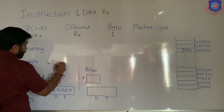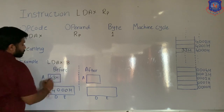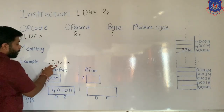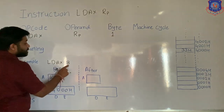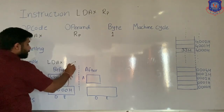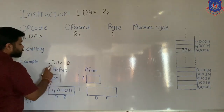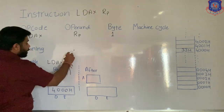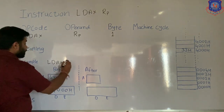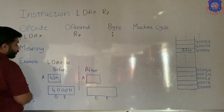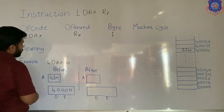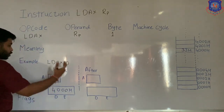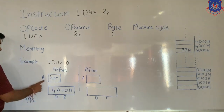Let's see one example to get a clear idea. LDAX B means load data to accumulator from the memory location specified in BC pair. If we write LDAX D, it means load data to accumulator from the memory location specified in DE pair.